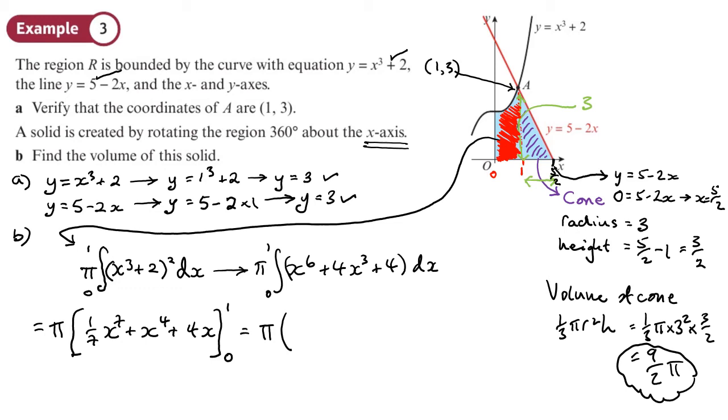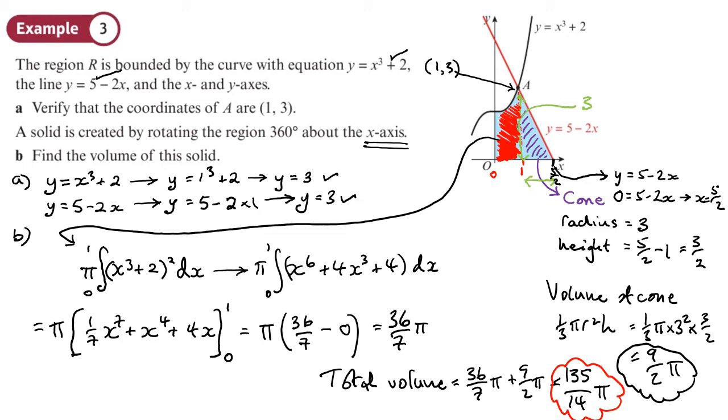I'm going to now work out what that is. If I put 1 in, it's basically going to be 1/7 + 1 + 4, which is 36/7, minus when I put 0 in, I'm taking away nothing. That gives me a volume of 36/7 π. So the total volume is 36/7 π + 9/2 π, and we get 135/14 π, and I'll leave it like that. That's an exact answer, and it will be units cubed.